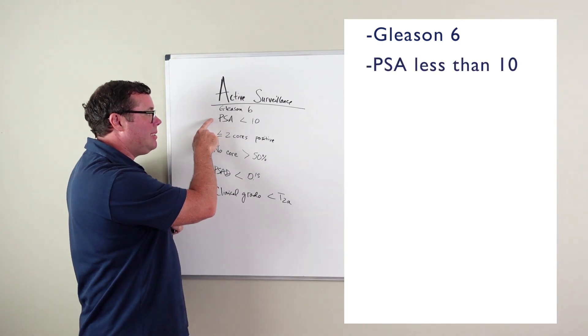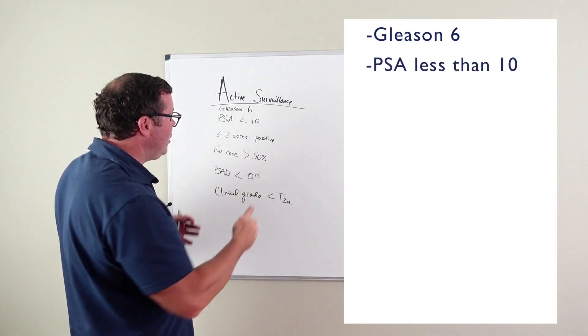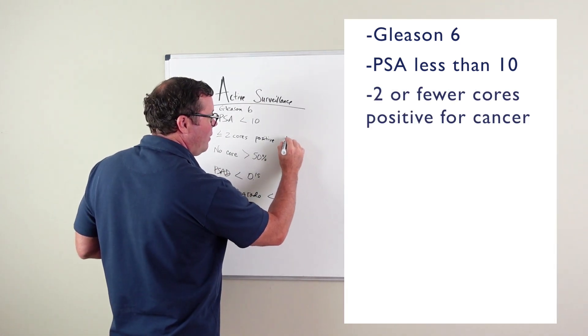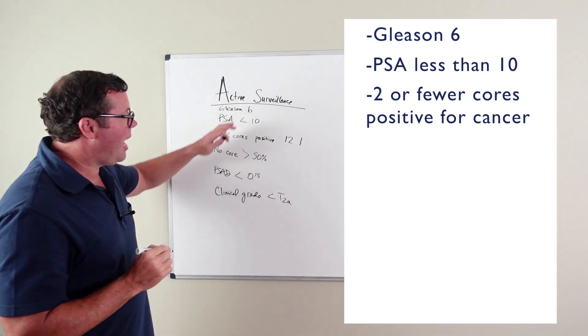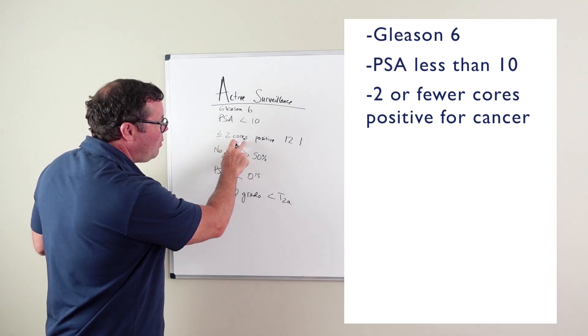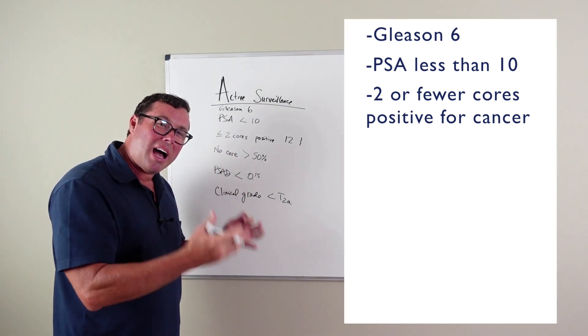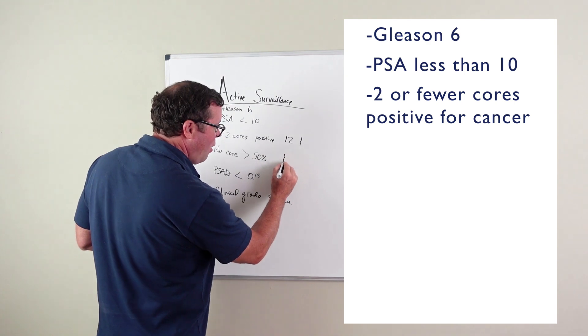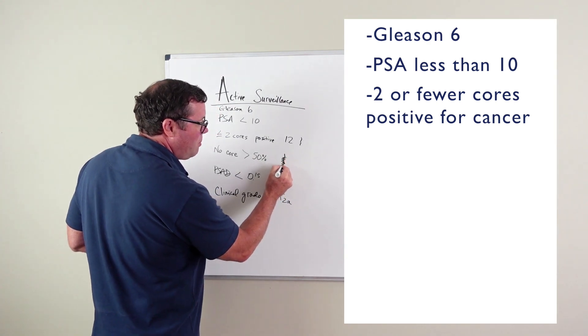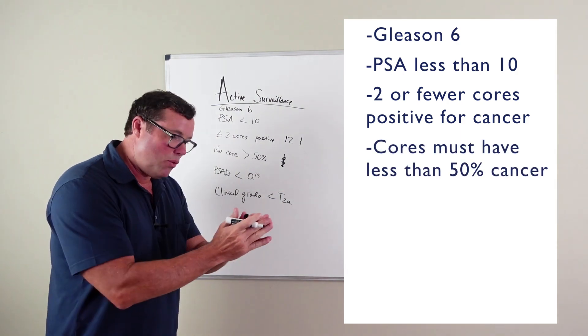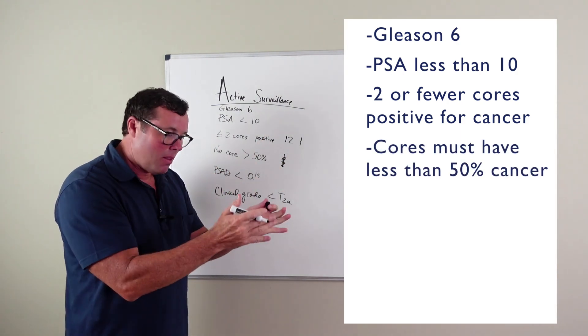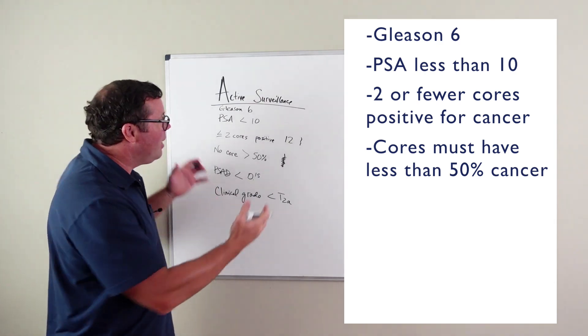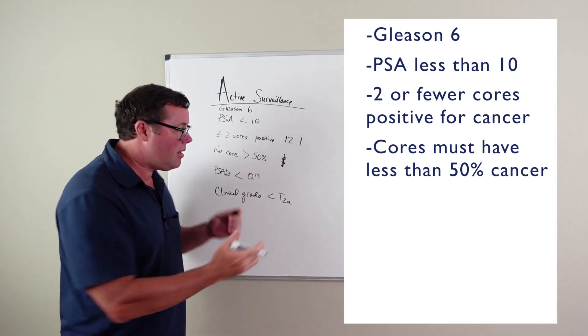You also would ideally like your PSA less than 10. And then you look at the volume of cancer that's on those biopsies. Usually 12 cores are taken at the time of your prostate biopsy, and you don't want any more than two of those cores positive for cancer because that suggests a higher volume of cancer. You also don't want any core to have more than 50% positive for cancer. So if you look at any core on your biopsy, if it says 70%, 80%, 90% of that core has cancer, then again, not likely the best candidate for active surveillance.